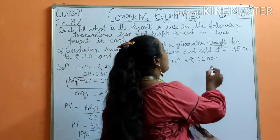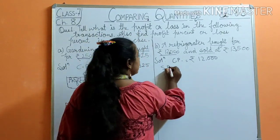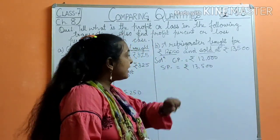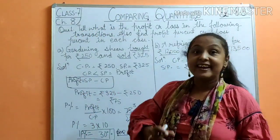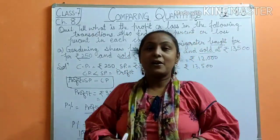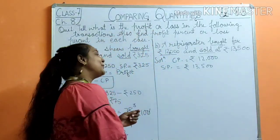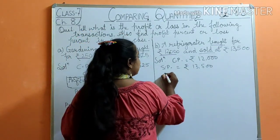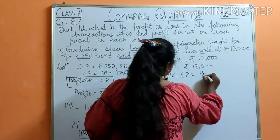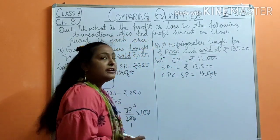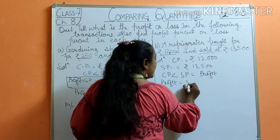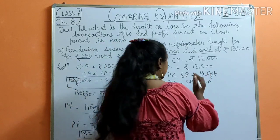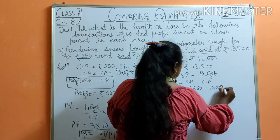Now, I've sold it for Rs. 13,500. So I'll write SP = Rs. 13,500. Here we can see that SP is bigger than CP. And when SP is bigger than CP, it means there is a profit. So profit equals SP minus CP, which is 13,500 minus 12,000.